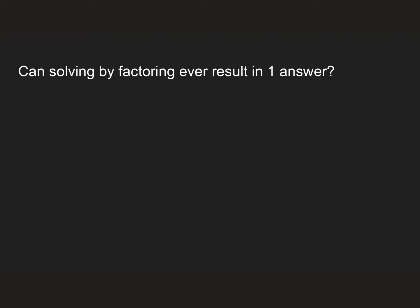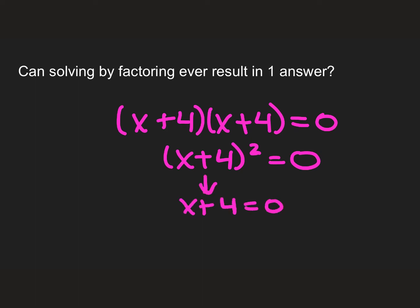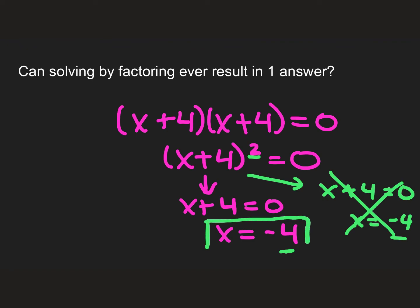The next question says, can solving it by factoring result in one answer? If I got to a situation where my factors were (x + 4)(x + 4) = 0, we could rewrite this as (x + 4)² = 0. Now when I write an equation, I could say x + 4 = 0, so I get x = -4. Now do I technically need to write a second equation? I could. I could say again because there's two here, x + 4 = 0 again, and get x = -4, but the answer is the same. So this doesn't even necessarily need to be involved in it. All we really need to know is we get one answer. So while it's not the common situation, it does happen that you could potentially have one answer.